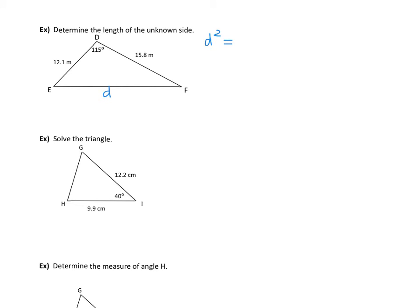My other two sides are squared and added together. I've rewritten the cosine law in terms of D, E, and F, and now I'm going to substitute in what I know.